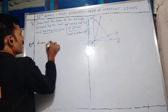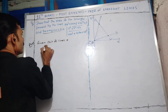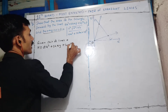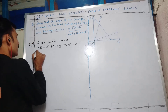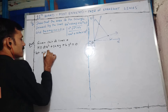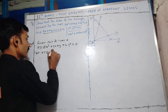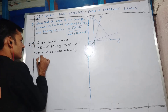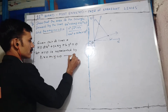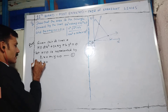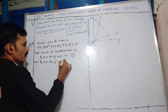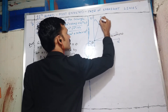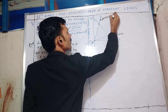The given pair of straight lines is Ax² + 2Hxy + By² = 0, which we can denote as S. Now, let S be represented by two lines: L1x + M1y = 0 (equation 1) and L2x + M2y = 0 (equation 2). These two lines are passing through the origin.